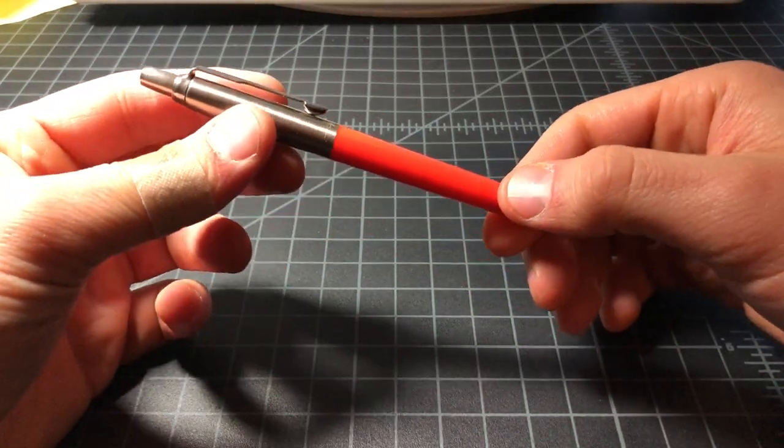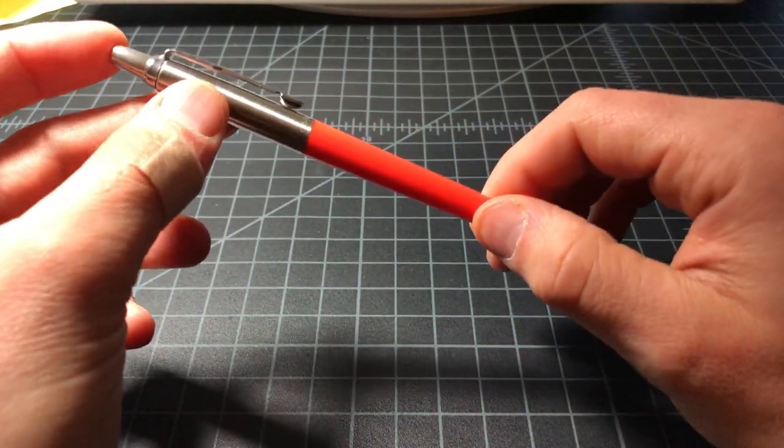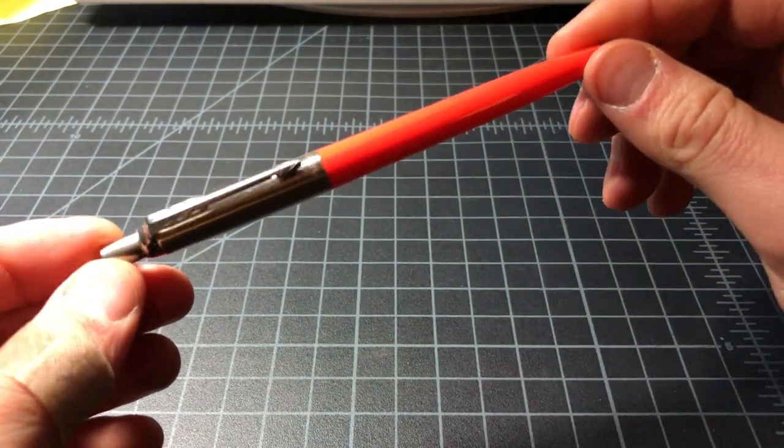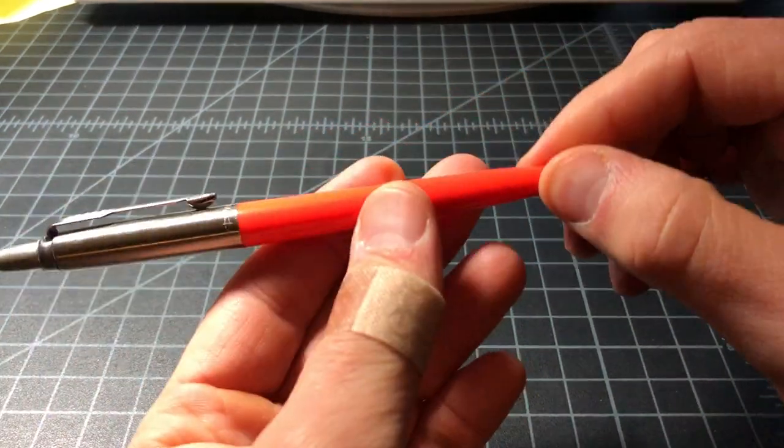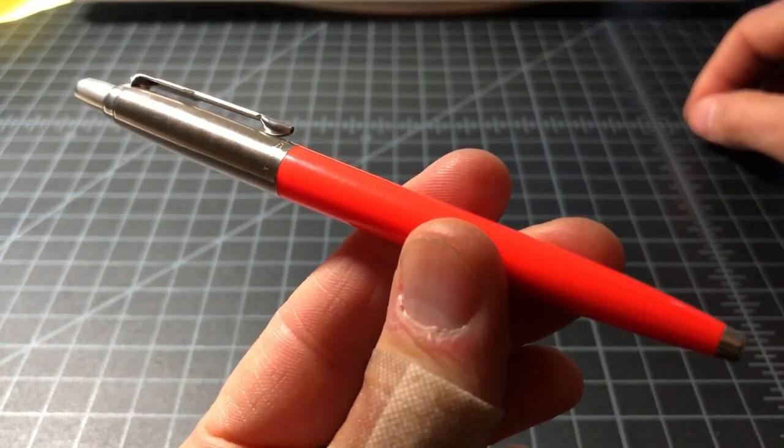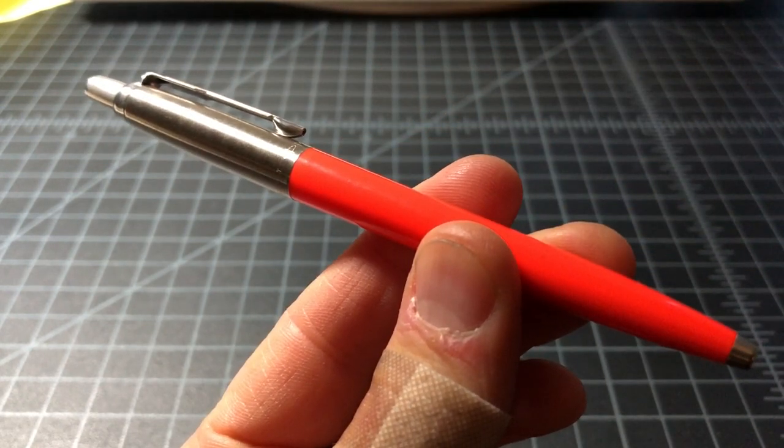So yeah that is the Parker Jotter, dollar for dollar. This is just about the best EDC pen out there for most people. I wouldn't say it's my favorite but it's really a great option and it's a sharp looking pen, and I really like it in these anniversary colors even if that means you forego the full metal body.